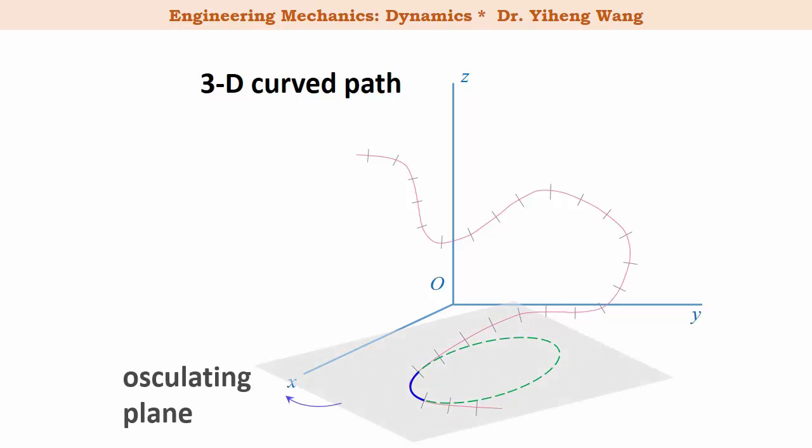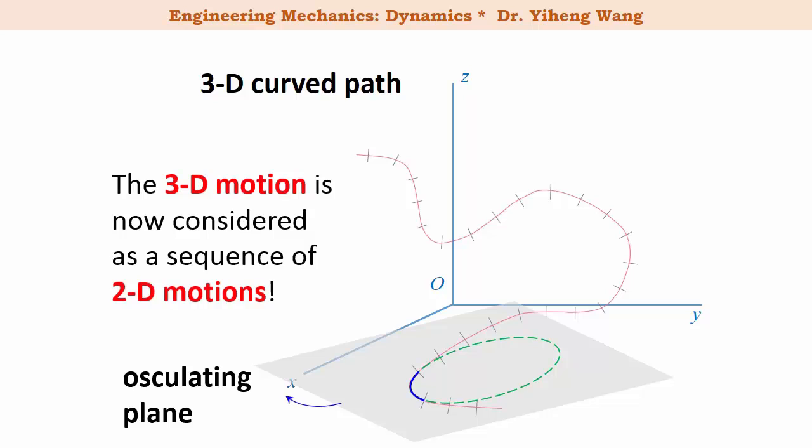This plane is known as the osculating plane, which refers to the plane that contains the small arced path. As you can see, this plane changes at different locations and different times. The reason to define it is that the 3D motion can be considered as a sequence of 2D motions limited within each plane.